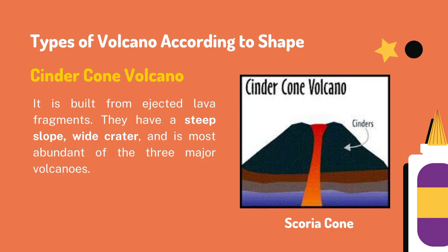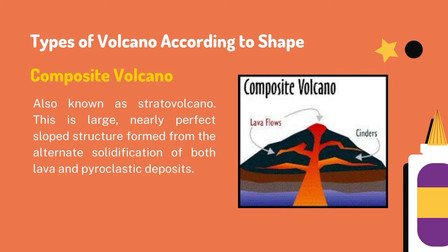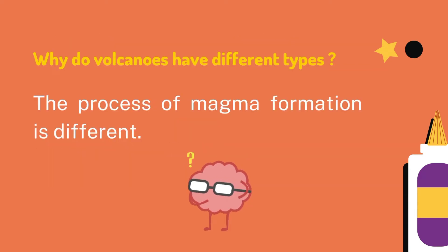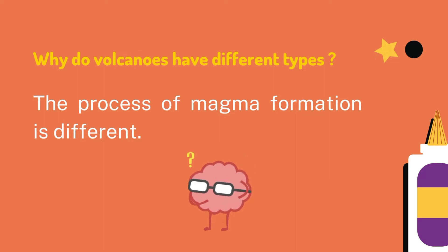It is also known as scoria cone. Lastly, we have composite volcanoes, also known as stratovolcanoes. This is a large, nearly perfect slope structure formed from the alternate solidification of both lava and pyroclastic deposits. According to volcanologists — the people who study volcanoes — some of the Earth's grandest mountains are composite or stratovolcanoes. One good example is our very own Mayon Volcano. But why do volcanoes have different types? It is because the process of magma formation is different at each type of plate boundary. Therefore, the composition of magma differs in each tectonic setting.